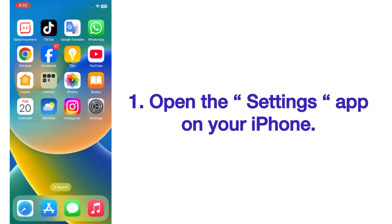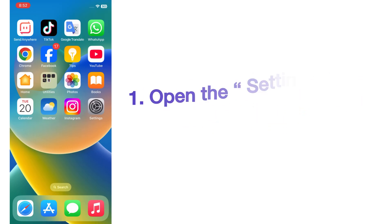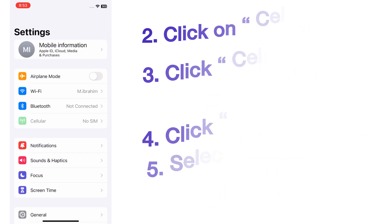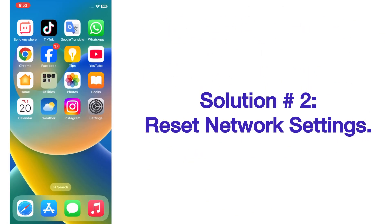Open the Settings app on your iPhone. On the Settings page, click on Cellular Data. Click on Cellular Data option, click Voice and Data, and select 5G Auto or 5G On.